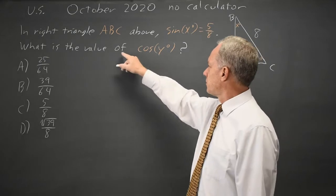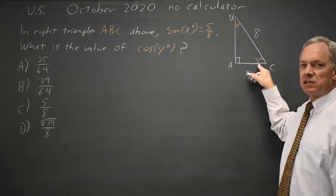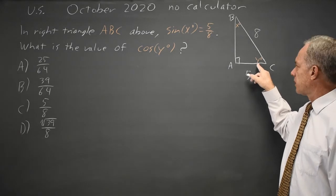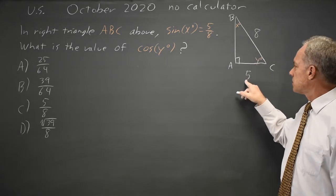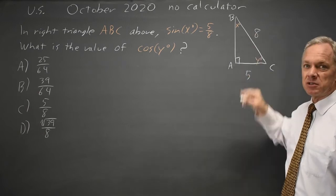And they're asking for the value of cosine of y degrees. The cosine of y is the side adjacent to this angle over the hypotenuse. The side adjacent to this angle is 5 under the number I made up, and the hypotenuse is 8.